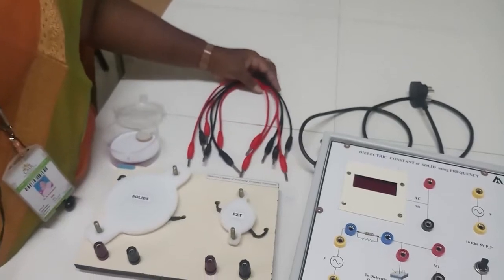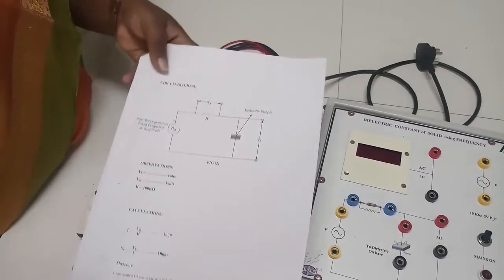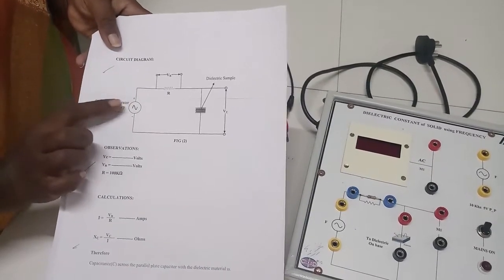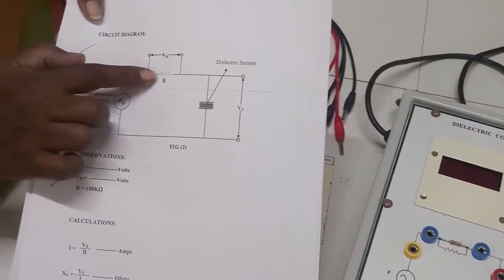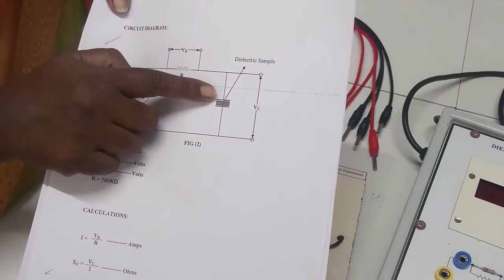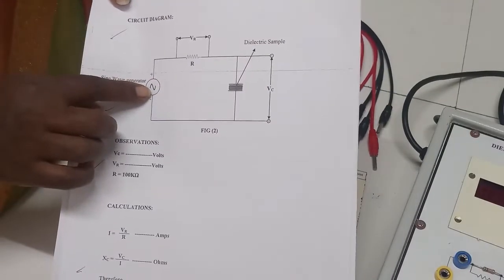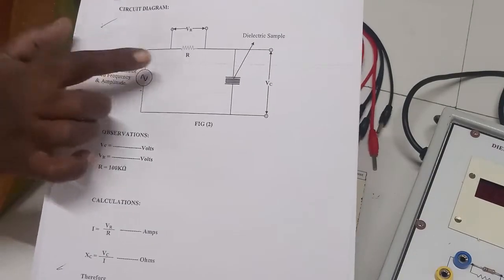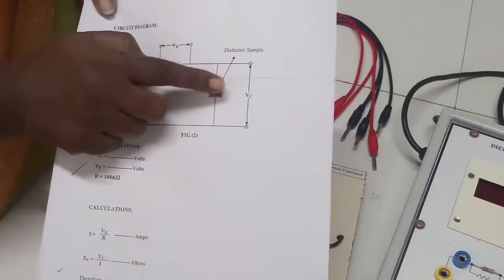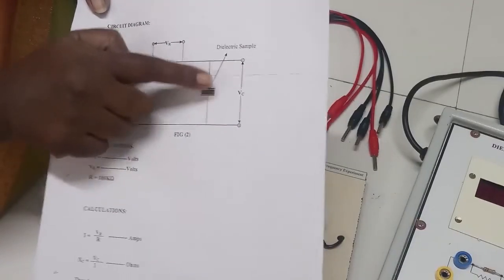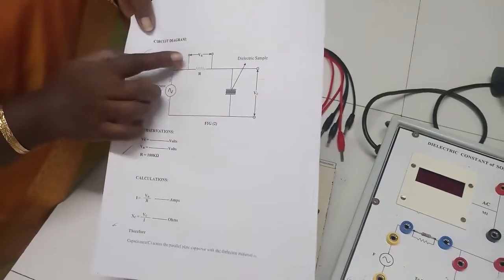Now I will show the circuit diagram and how to give the connections on the board. The circuit uses a sine wave generator as the power supply at a frequency of 10 kilohertz, connected to a resistor, which is connected to the parallel plate capacitor. In between the capacitor plates we keep the dielectric sample, and the circuit loops back to the signal generator. There are only three components: signal generator, resistor, and capacitor with dielectric sample. We take two voltage values: voltage across the capacitor (Vc) and voltage across the resistor (Vr).